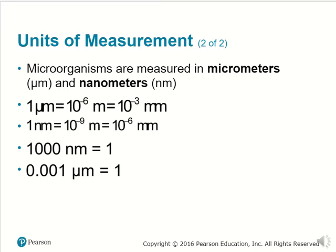Basically, one micrometer is 1/1000 of a millimeter. Another way of looking at it: since you're going to be using nanometers and micrometers between different microorganisms, 1,000 nanometers is the same as one micrometer. We talk about micrometers for bacteria or cellular organisms, whereas nanometers are for typically viruses. So 0.001 micrometers is one nanometer.